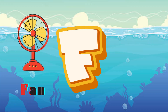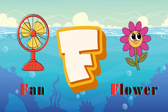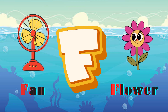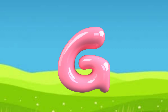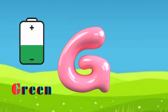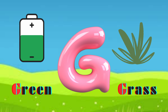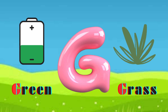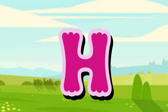F is for fan, f-f-fan. F is for flower, f-f-flower. G is for green, g-g-green. G is for grass, g-g-grass.